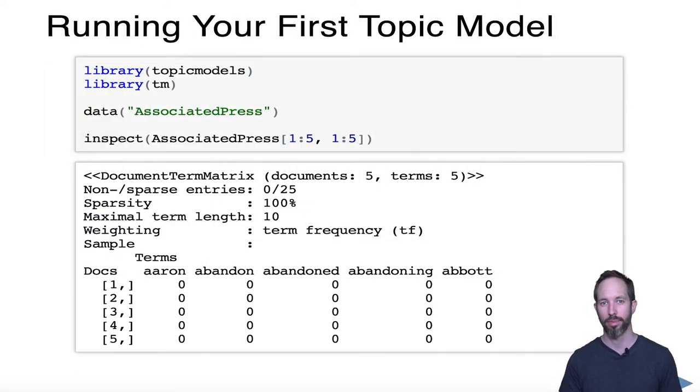We're going to use the topic models package in R as well as the text mining package. We'll use some data that comes with the topic models package, called the Associated Press dataset. The AP is a large media organization in the United States that generously donated a bunch of its news articles to people doing natural language processing some years ago.